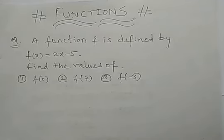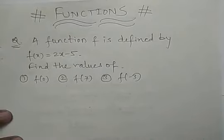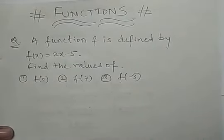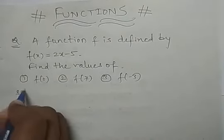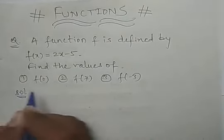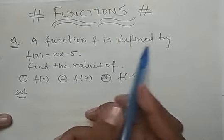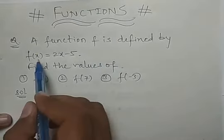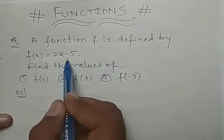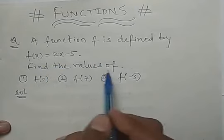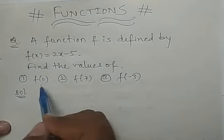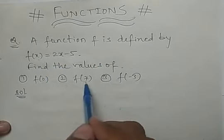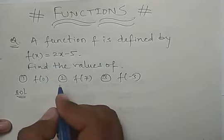Hello students, we are doing some more questions in this video on functions. The question is: a function f is defined by f(x) = 2x - 5. Find the value of f(0), f(7), and f(-3).